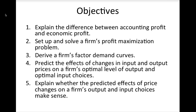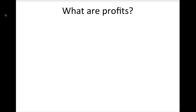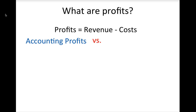And finally, you should be able to explain whether the predicted effects of price changes on a firm's output and input choices make sense. In general, a firm's profits are the difference between what it makes — its revenue — and what it spends — its costs. In economics, we distinguish between two types of profits: accounting profits and economic profits.